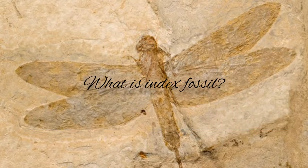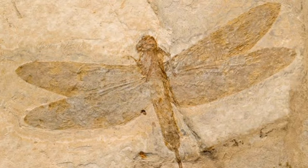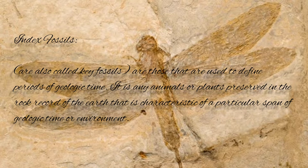What is an Index Fossil? Index fossils, also called key fossils, are those that are used to define periods of geologic time — any animal or organism preserved in the record of the Earth that is characteristic of a particular span of geologic time or environment. Some examples of fossils are fish fossils, land fossils, dinosaur fossils, and insect fossils.